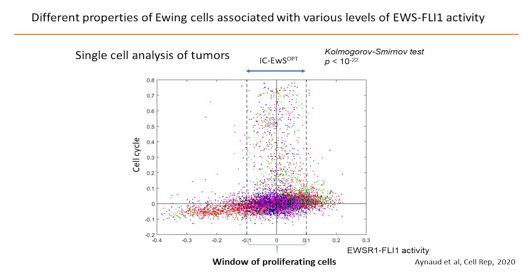Cells with high EWS-FLI1 activity have a high OXPHOS signature, and cells with low EWS-FLI1 activity mostly have a glucose catabolic signature and signs of hypoxia. Importantly, if you plot EWS-FLI1 activity on the x-axis and cell cycle signature on the y-axis, cells that are cycling occupy only a window of EWS-FLI1 activity. When EWS-FLI1 activity is lower than that window, cells are not proliferating and are mostly mesenchymal. When EWS-FLI1 activity is higher than the window, cells are also not proliferating — you need tight regulation of EWS-FLI1 activity for cells and tumors to grow.